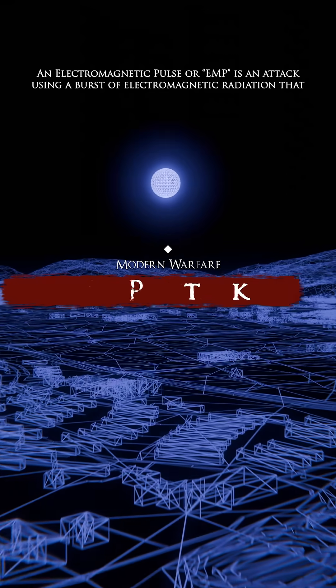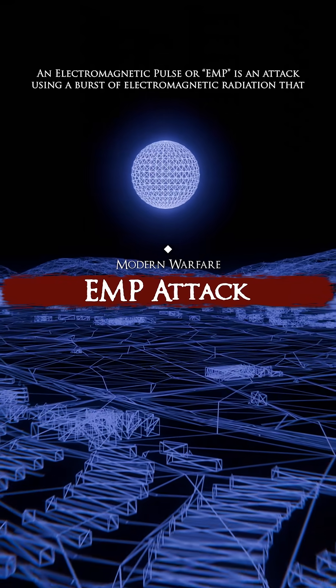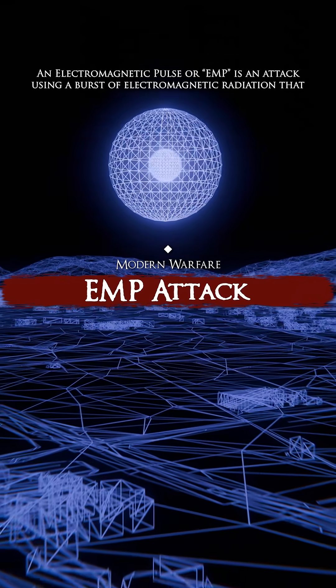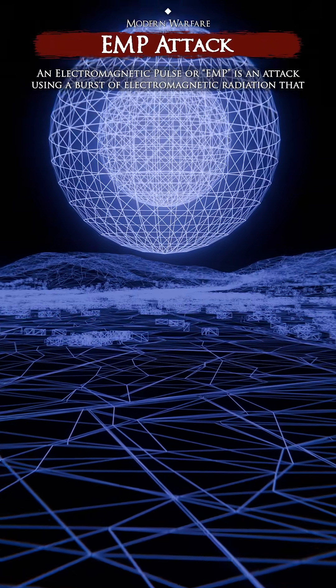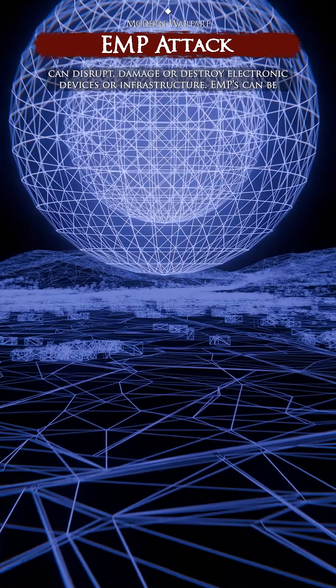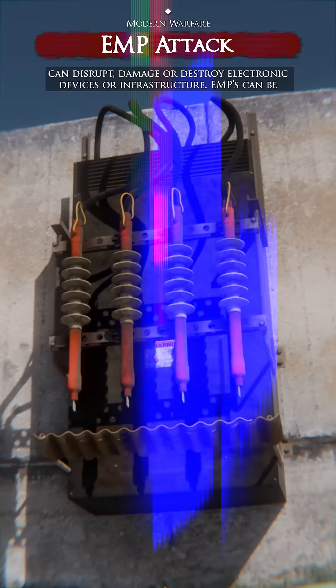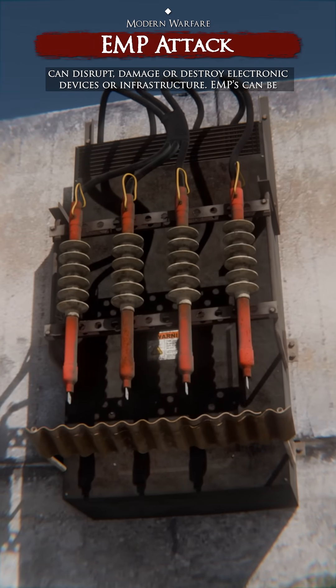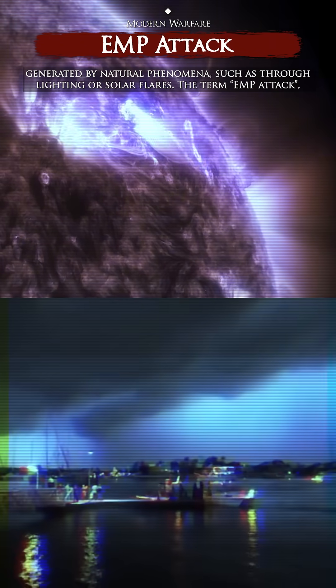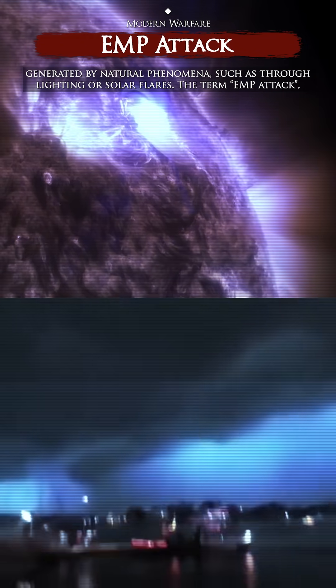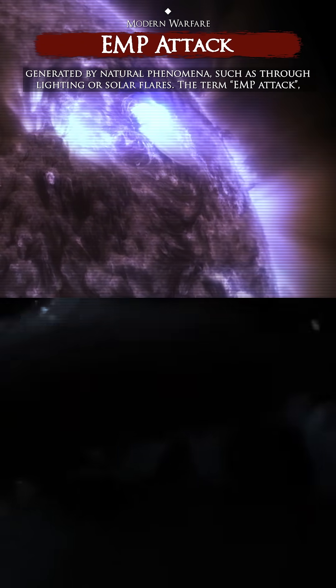An electromagnetic pulse, or EMP, is an attack using a burst of electromagnetic radiation that can disrupt, damage, or destroy electronic devices or infrastructure. EMPs can be generated by natural phenomena, such as through lightning or solar flares.